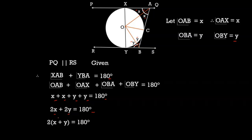Taking 2 as a common factor: 2 times (x plus y) equals 180 degrees. Therefore, x plus y equals 180 divided by 2, which is 90 degrees.